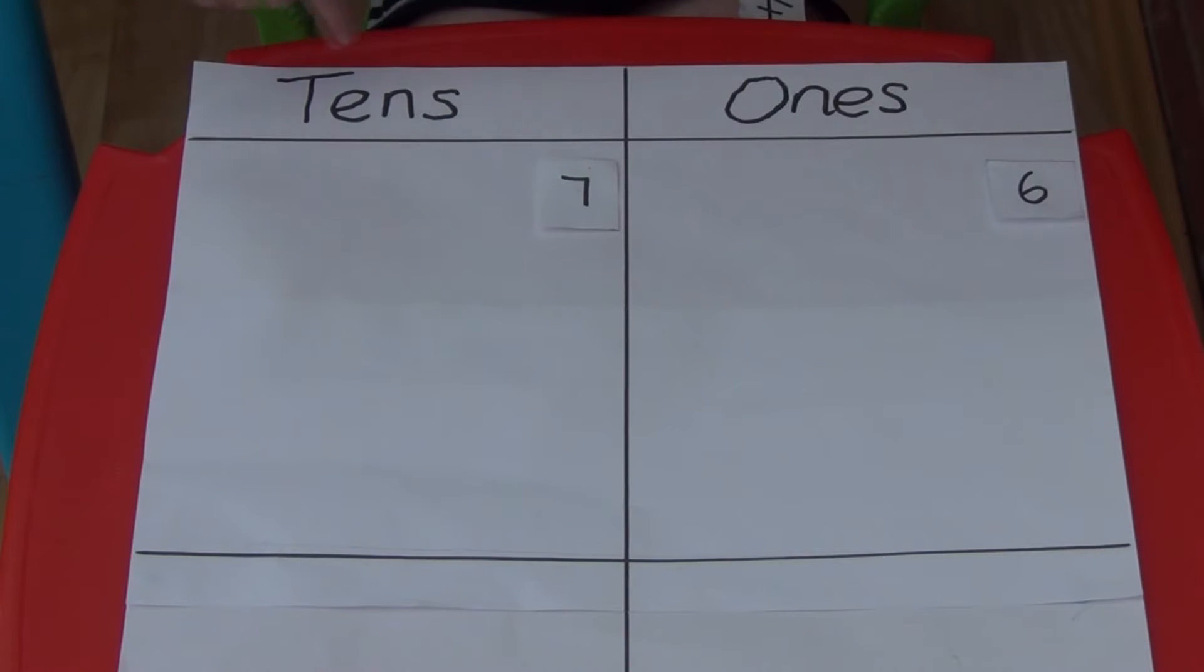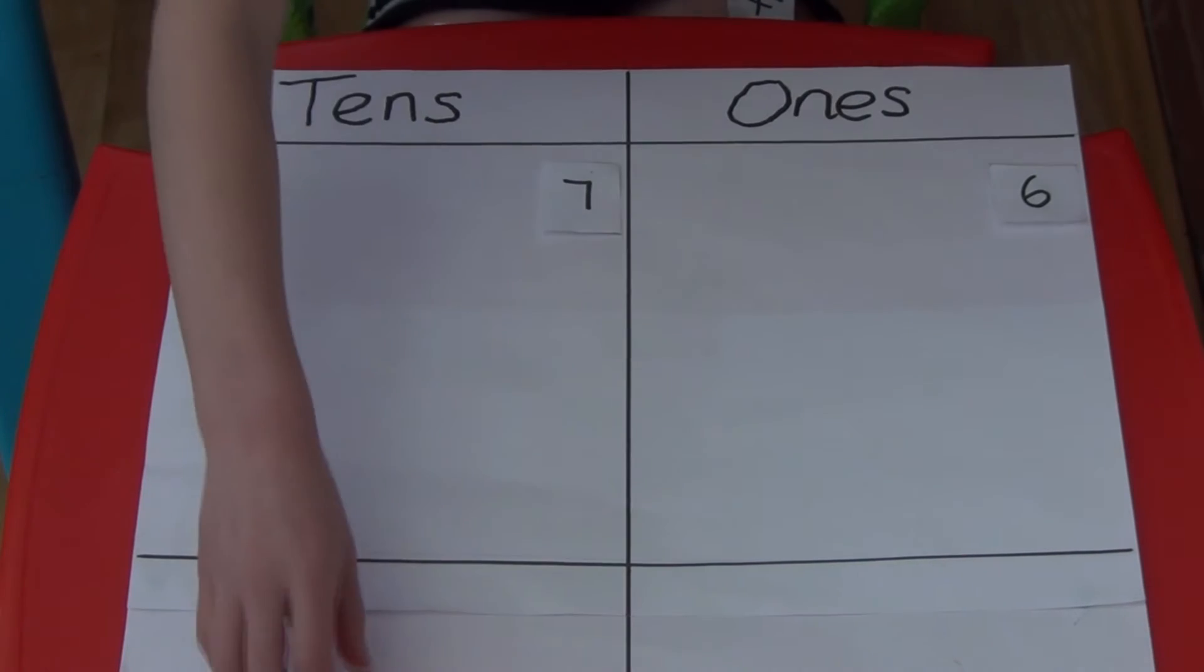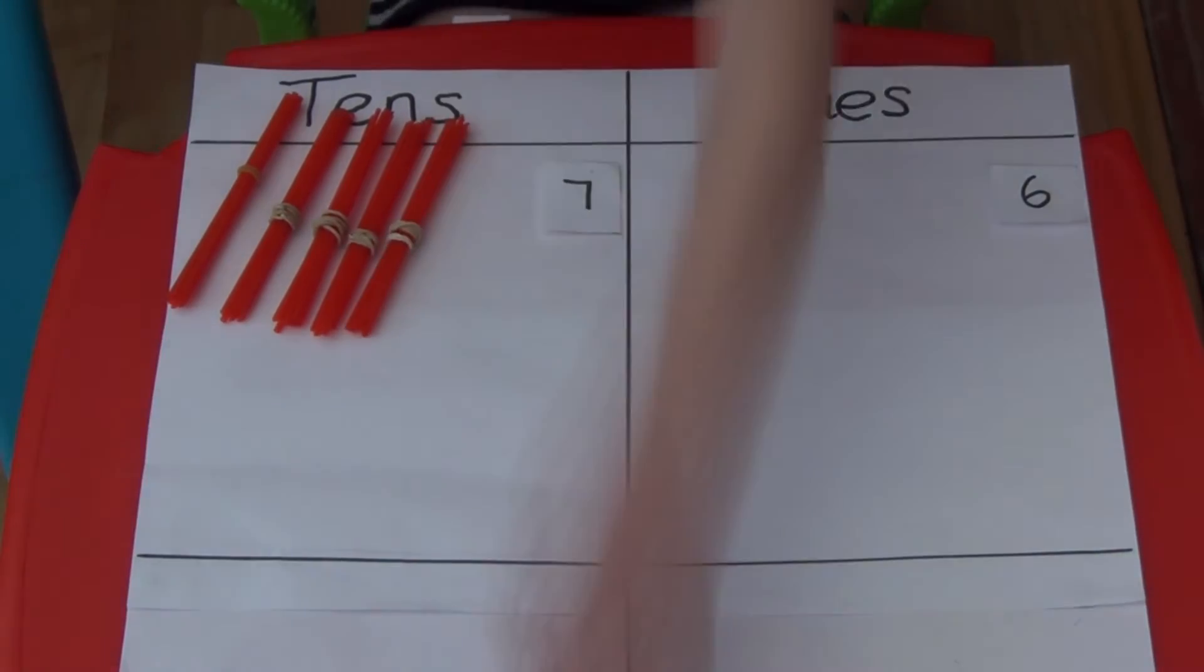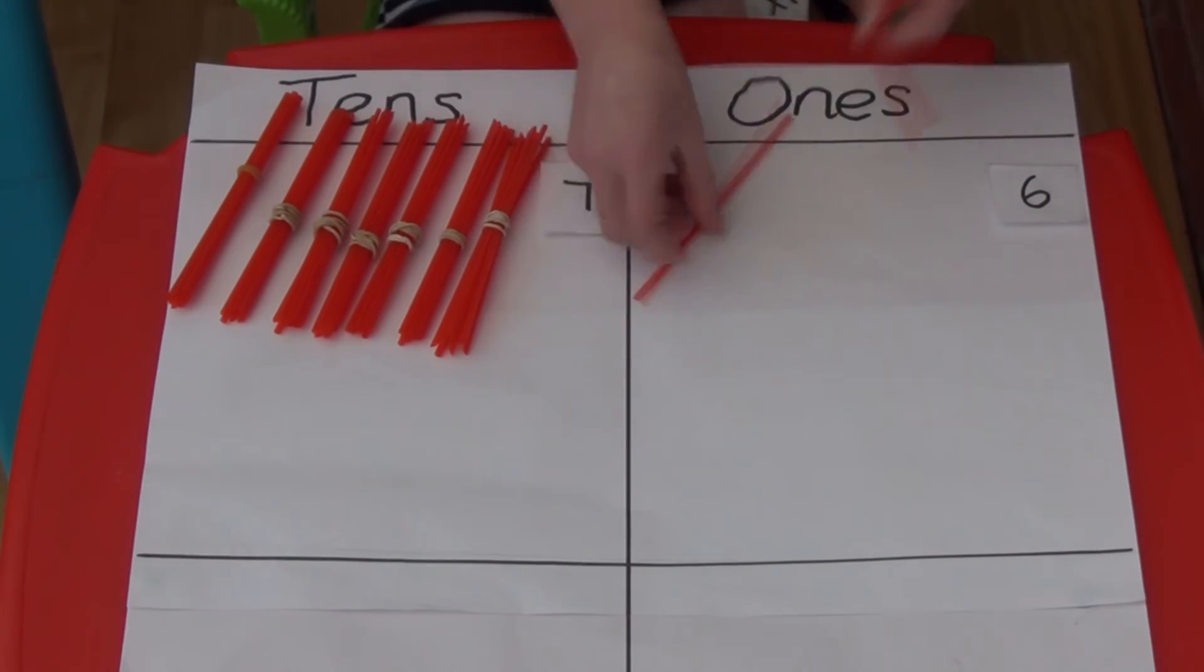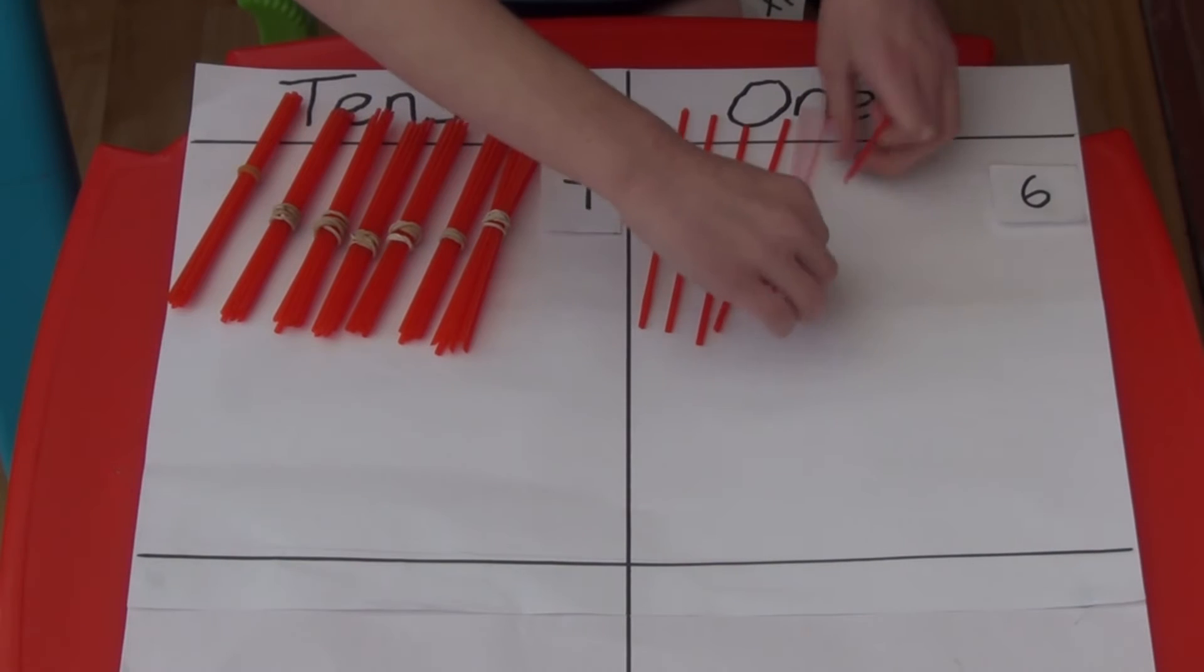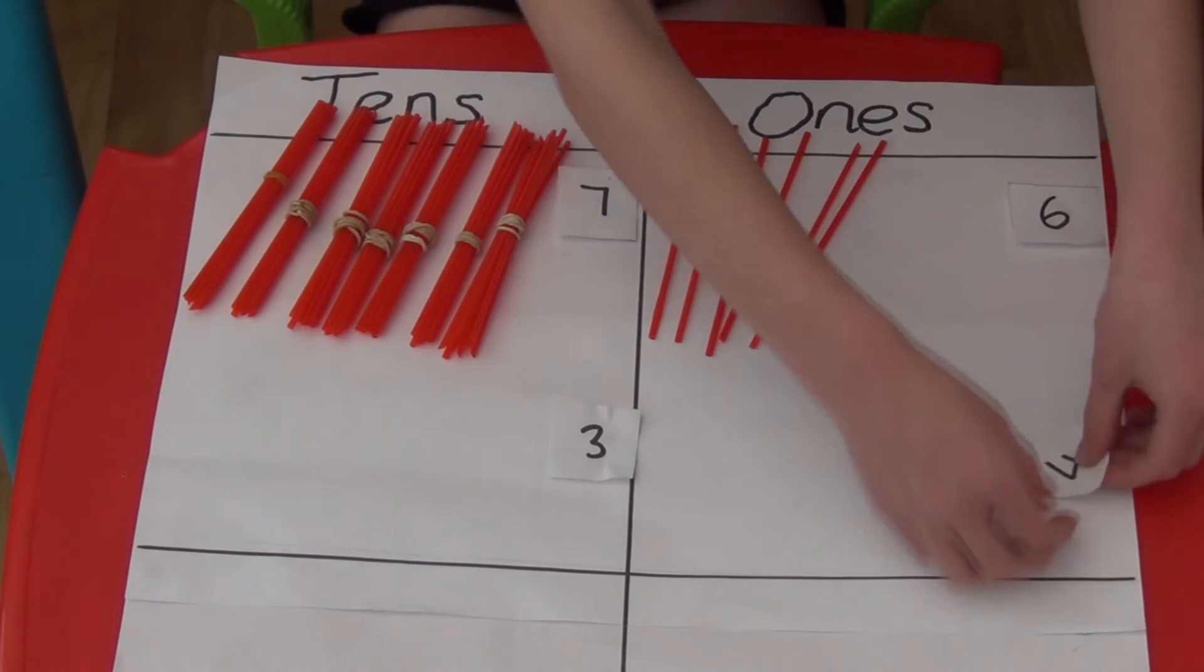I've drawn a baseboard which I've split into tens and ones. For 76 I'm going to need 7 bundles of tens and 6 ones. Underneath I'm going to show you the number being taken away. We are going to take away 3 tens and 4 ones.